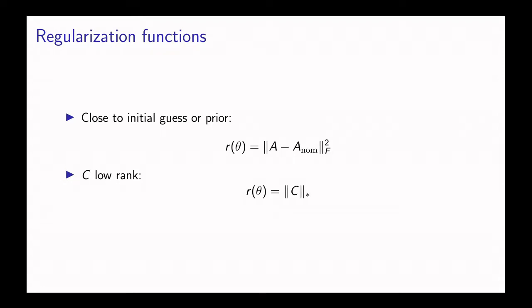Another possible case is that we might want C to be low rank, in which case we would use for example the nuclear norm regularizer on C, which for lower rank C has a lower nuclear norm. Although any regularization function is possible.